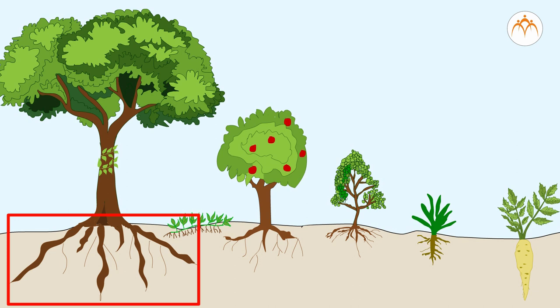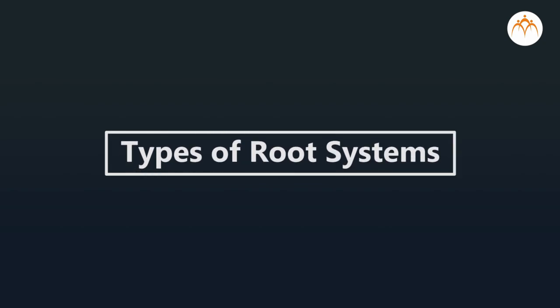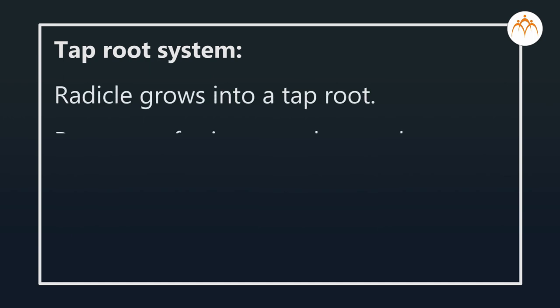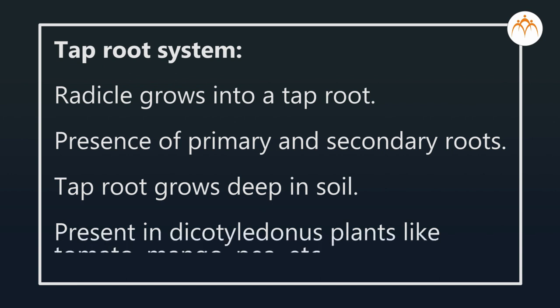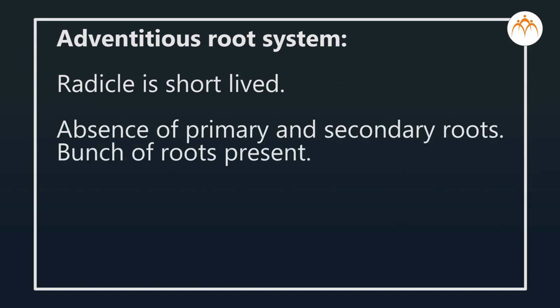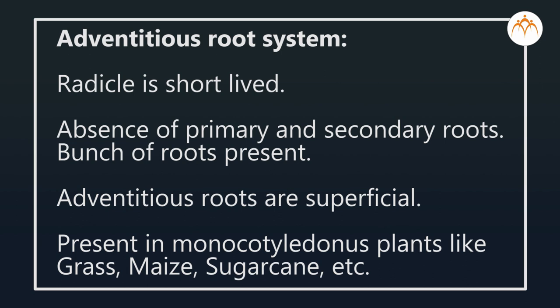Can you guess the type of root system in mango tree and sugarcane plant? Usually, tall trees have tap roots and short plants possess adventitious roots. There are two types of root systems: tap root system and adventitious root system. In the tap root system, the radicle grows into a tap root with primary and secondary roots that grow deep in soil — present in dicotyledonous plants like tomato, pea, mango, etc. In the adventitious root system, the radicle is short-lived, a bunch of roots is present, and roots are superficial — present in monocotyledonous plants like grass, maize, sugarcane, etc.